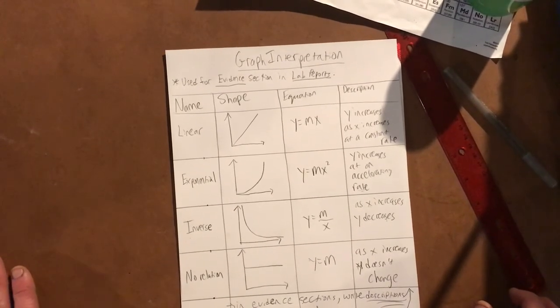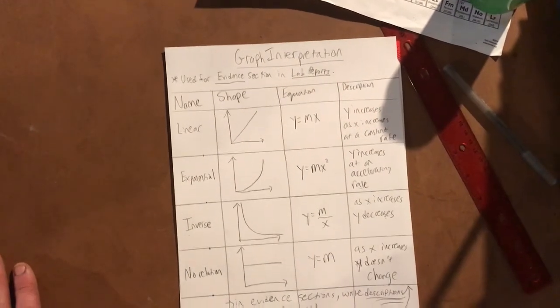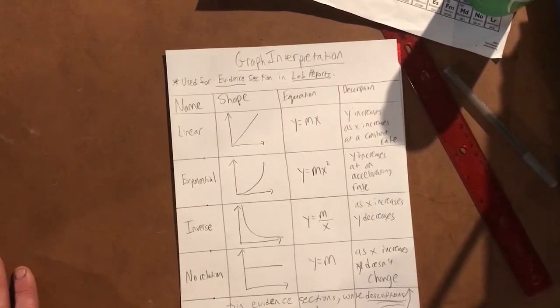So the graph is going to tell us exactly how things are related, and then you could just use this sentence in your evidence section from now on.